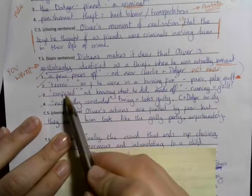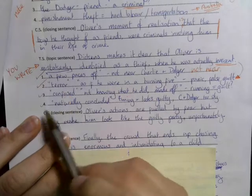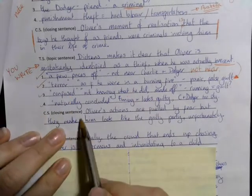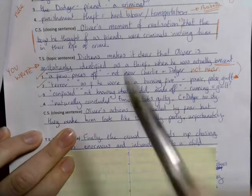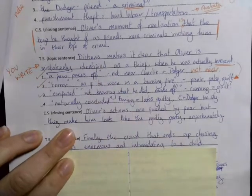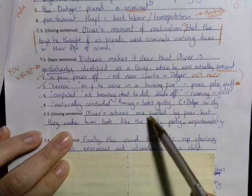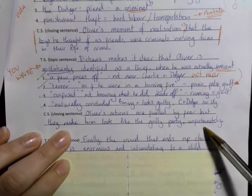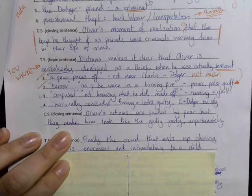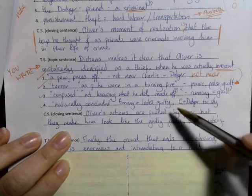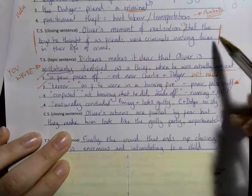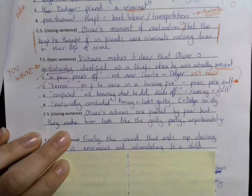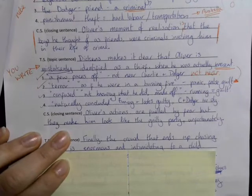So I said that Oliver is mistakenly identified as a thief, he's actually innocent. And to show he's innocent: standing far away, he's really scared, he's confused, not in the know, but he looks guilty. So what's my closing sentence? It's got to mirror this topic one. What did you go for? Mine was: 'Oliver's actions are fueled by fear but they make him look like the guilty party unfortunately.' So I tried to round up the fact that these two balance, the two things: that he looks guilty but actually it's a mistake. How did you get on with that? Was it difficult or is it okay? We're going to have one more go.